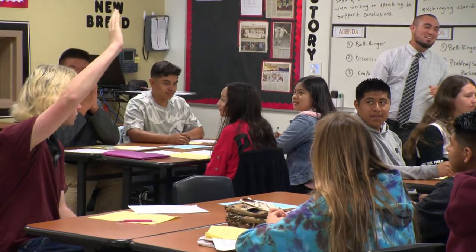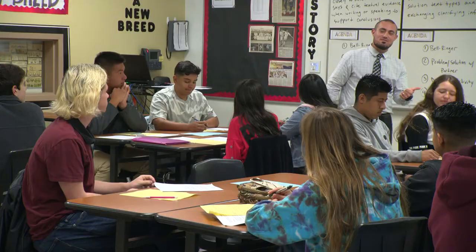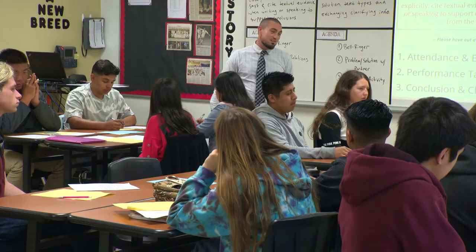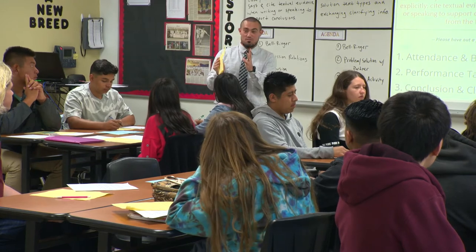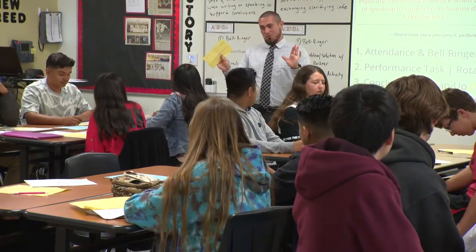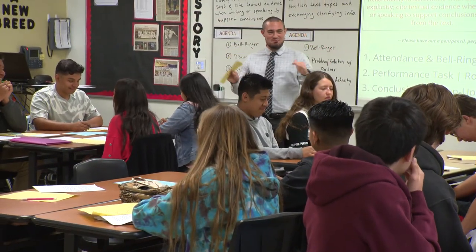Students volunteer responses. Lance says an argument should have a whole bunch of different sources and a lot of evidence leaning towards one side. Josiah adds there should also be a counter-argument so you see where the other side stands, but also why you believe your side is right, and evidence to back it up. The teacher affirms: you've got evidence and the counter, but something comes at the beginning of the argument. Kayla supplies the missing element: the claim. The teacher confirms: the claim — the main argument.